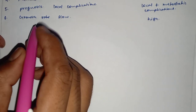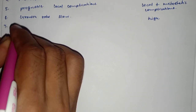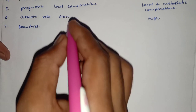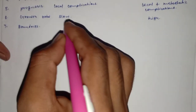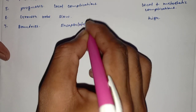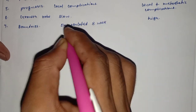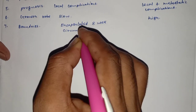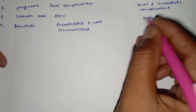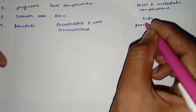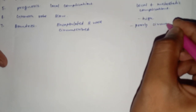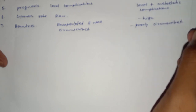Next is the boundaries of the tissues. The boundaries of the benign tumour are either encapsulated and well circumscribed, and in the malignant tumour it is poorly circumscribed and irregular.